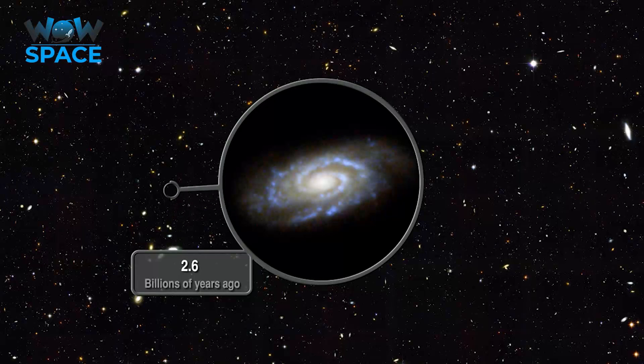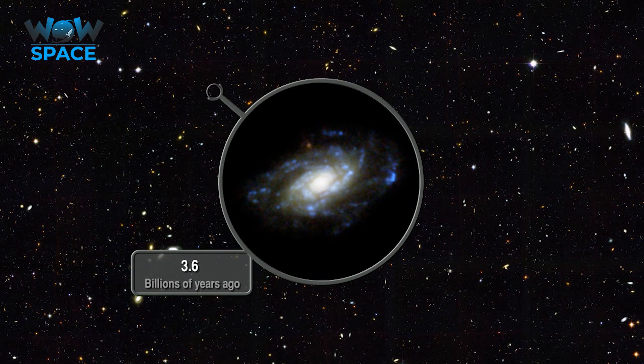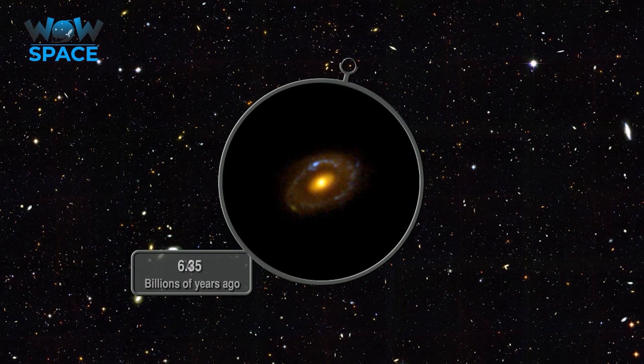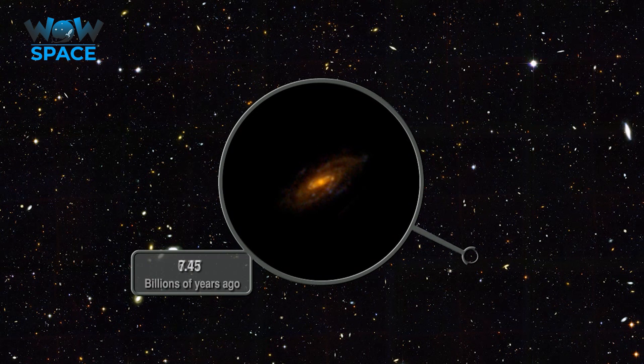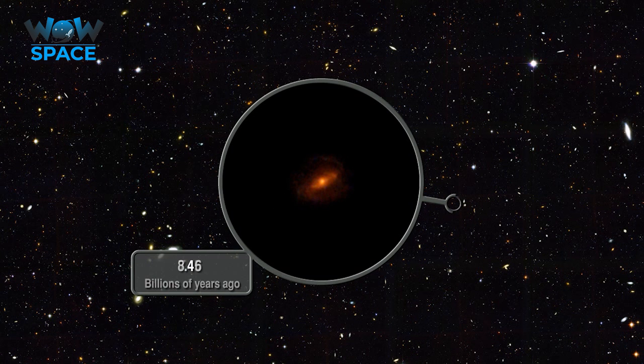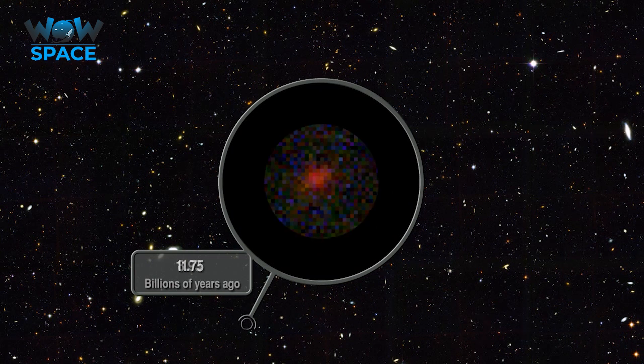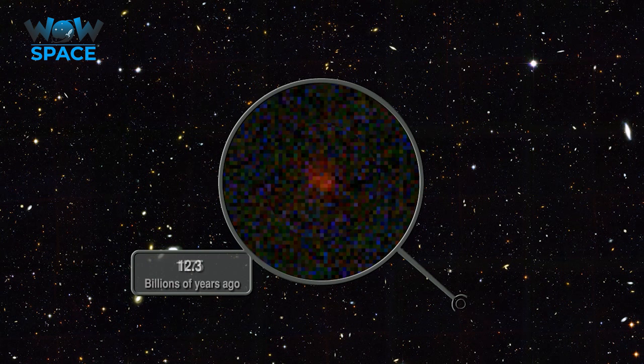The galaxies towards the furthest reaches of what we can see have another noticeable characteristic. The further they are from us, the redder they appear. Distant galaxies become redder due to the stretching of light wavelengths through the expansion of the universe in a process known as redshift.